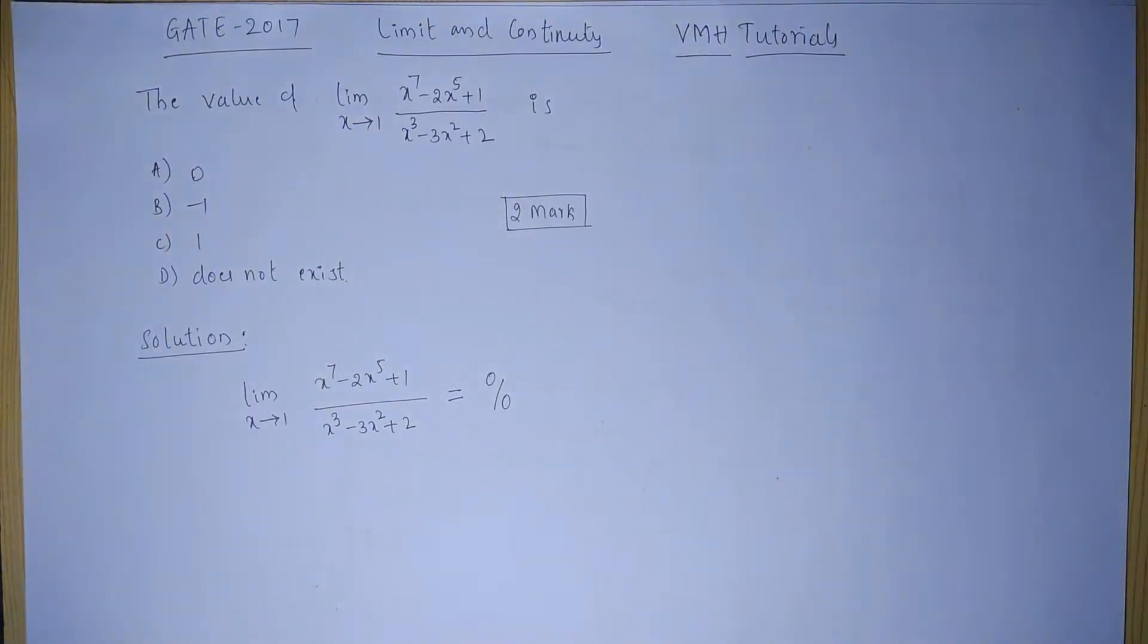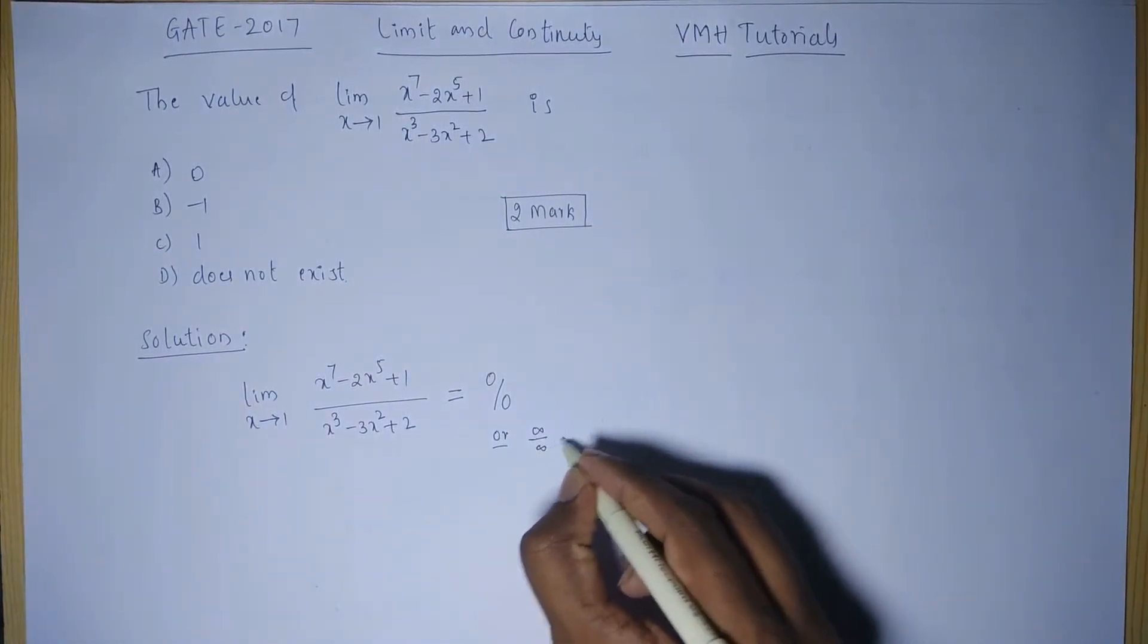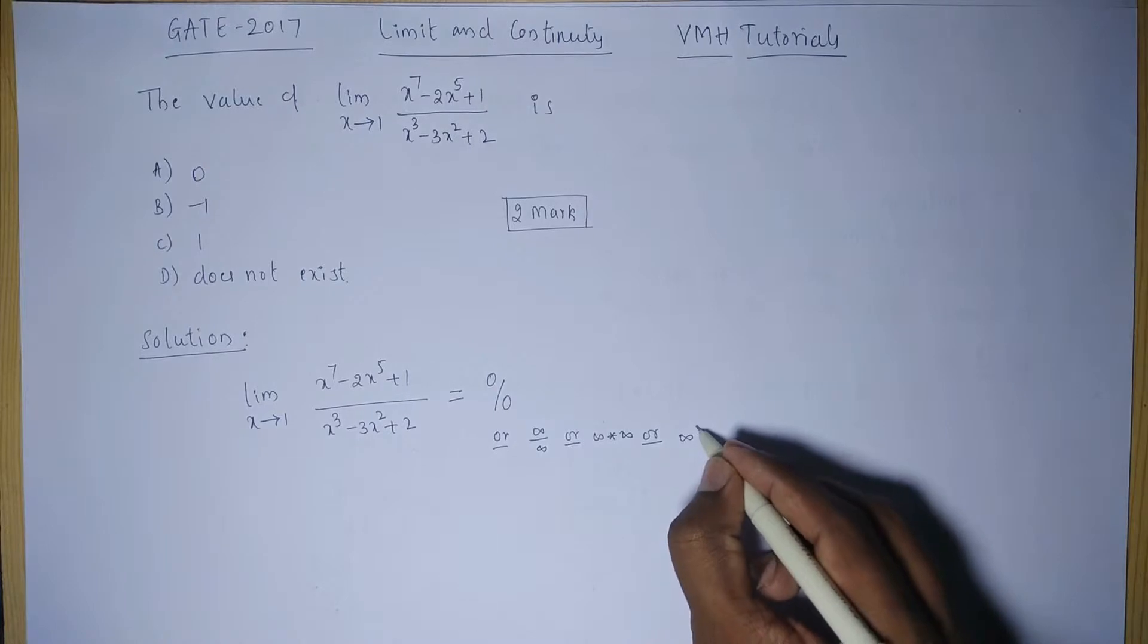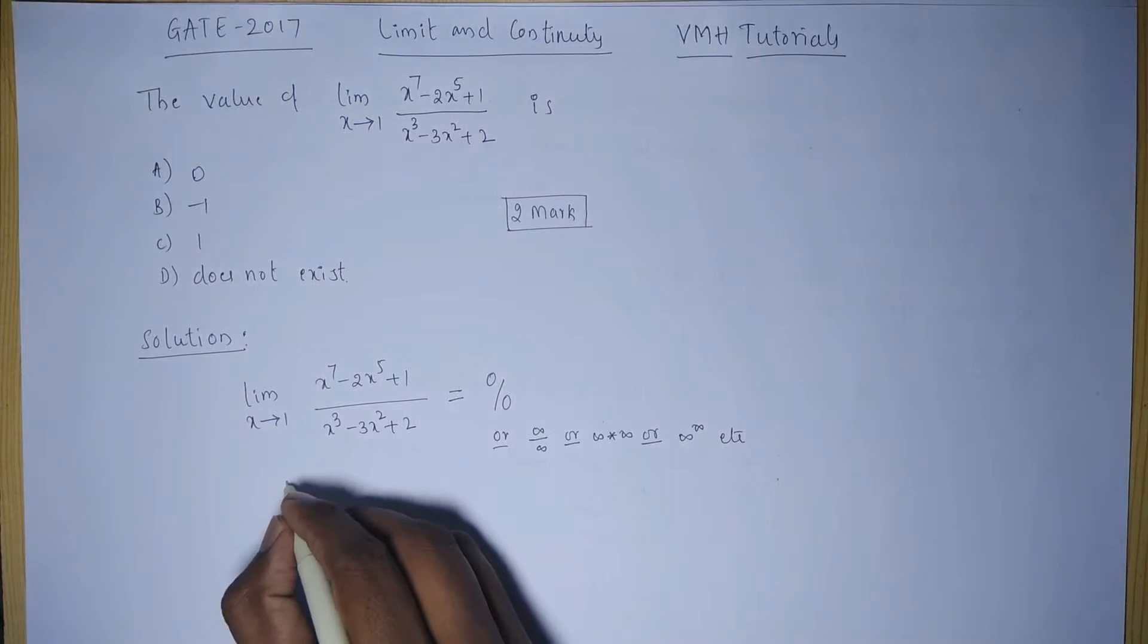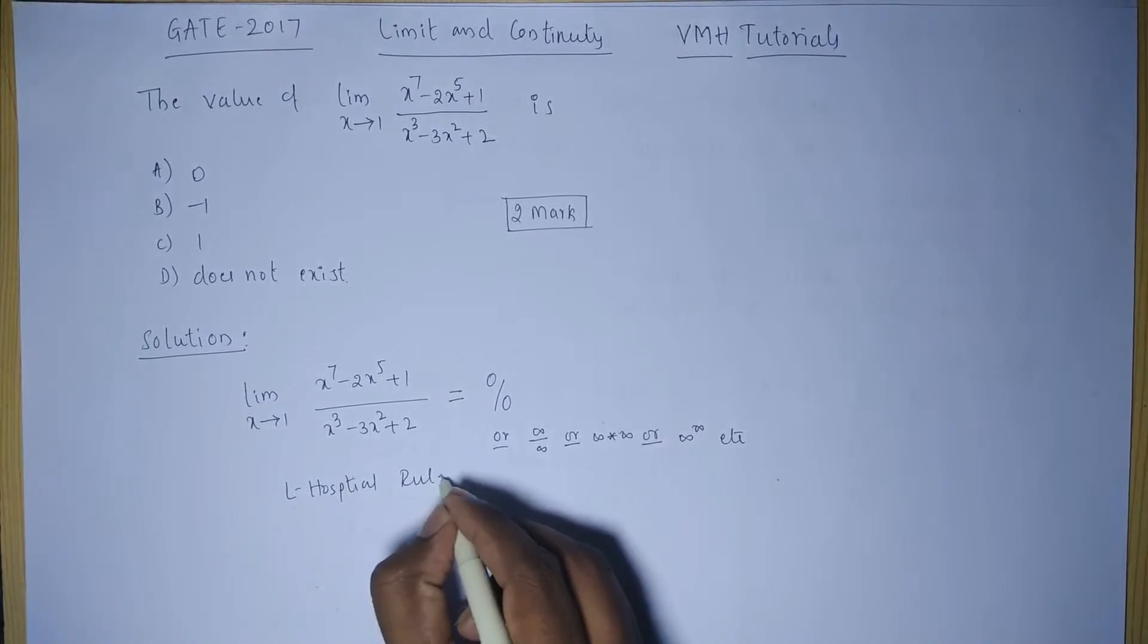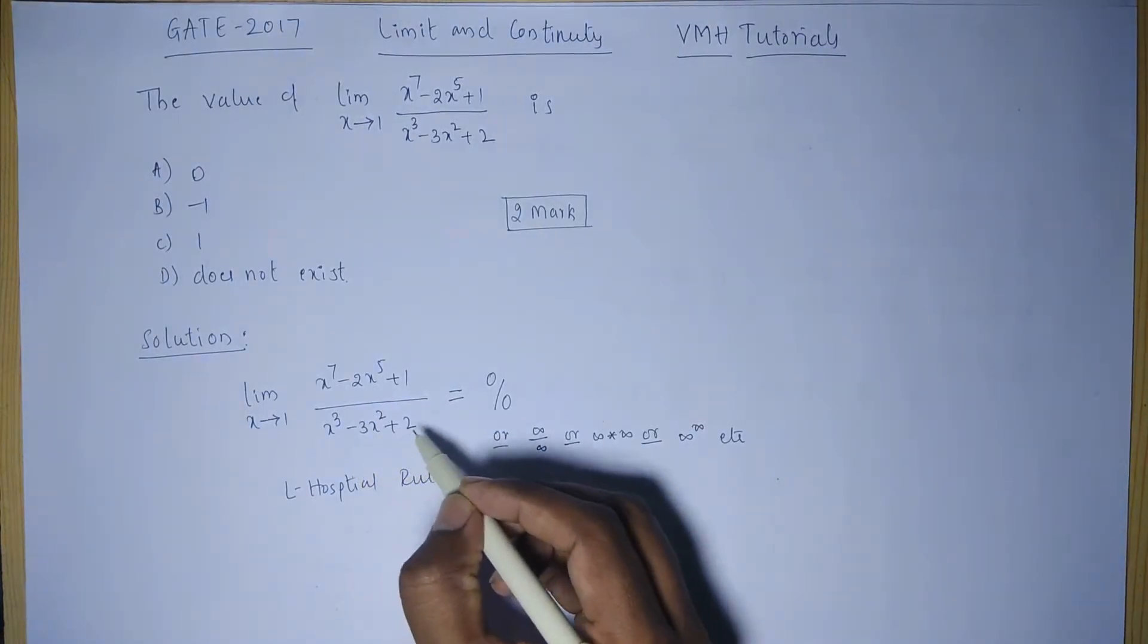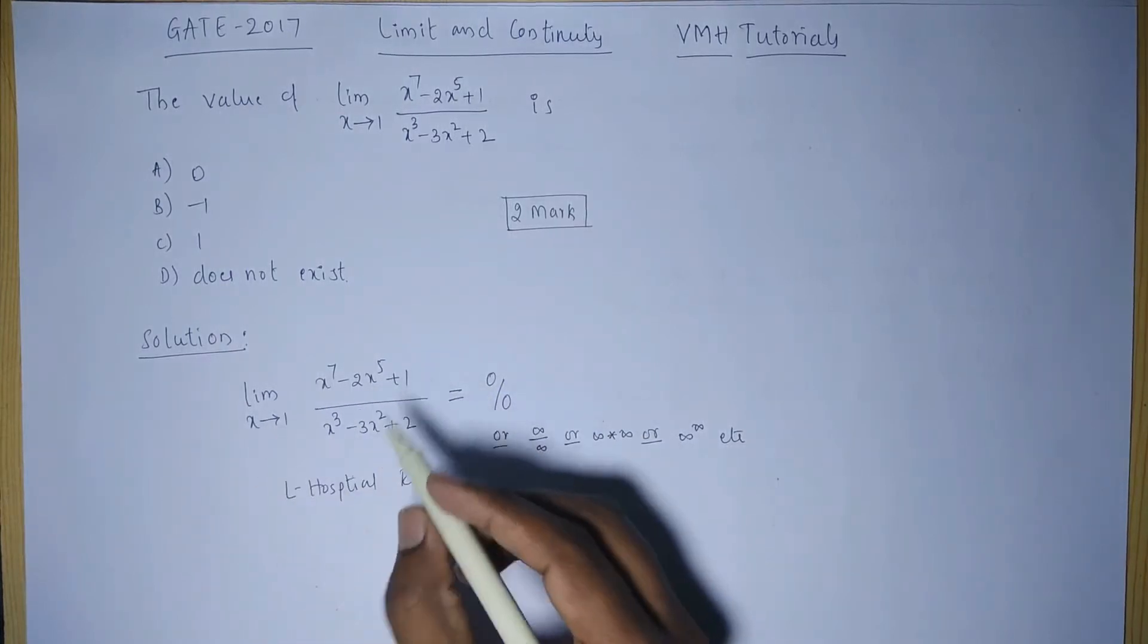Whenever we get a 0 by 0 form or infinity by infinity form or infinity into infinity or infinity raised to infinity, etcetera, we need to apply L'Hospital's rule. In this case, we will differentiate the numerator with respect to x and denominator with respect to x individually, and then we will put the value of x in the final expression.